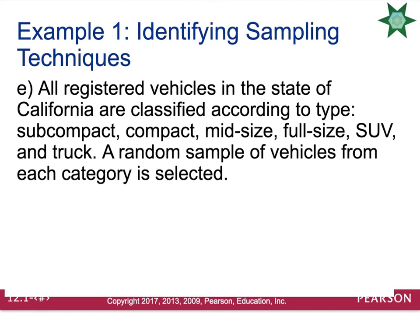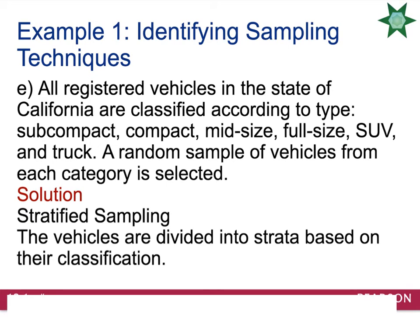All registered vehicles in the state of California are classified according to type: subcompact, compact, midsize, fullsize, SUV, and truck. A random sample of vehicles from each category is selected. Notice you broke it up into groups related by a characteristic called a strata — so you have stratified them and then selected a sample from each group. This is a stratified sampling technique.